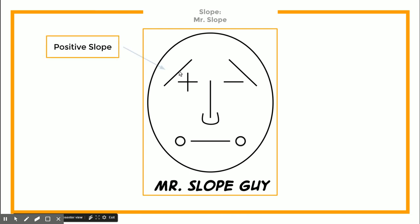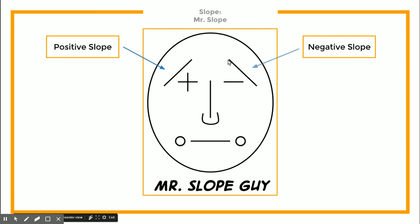A positive slope always goes from the bottom left up towards the top right, and that's why we've got a little positive sign for the 'I' on Mr. Slope here. A negative slope goes in the opposite direction — it starts near the top and goes down towards the right — and that's why his 'I' looks like a negative sign, telling us that's a negative slope.